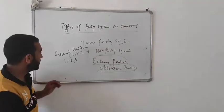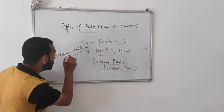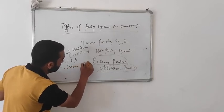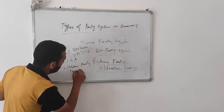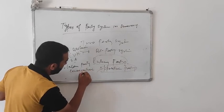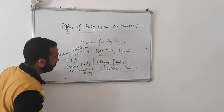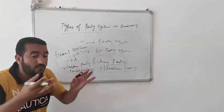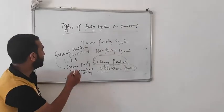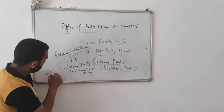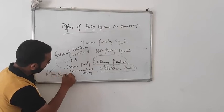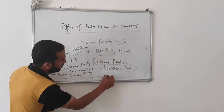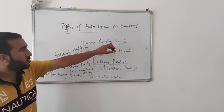In Great Britain, the two major parties are the Labour Party and the Conservative Party. In the USA, there is the Republican Party and the Democratic Party. This is all about the two-party system.